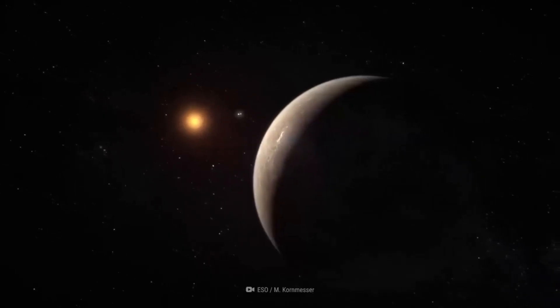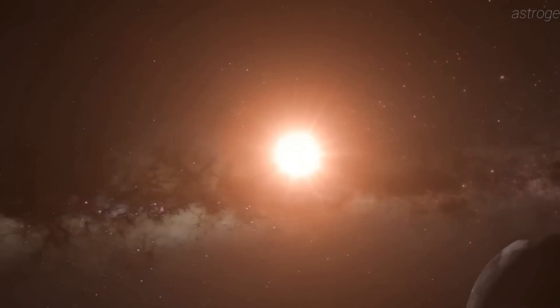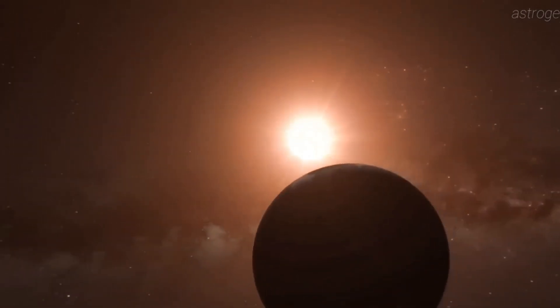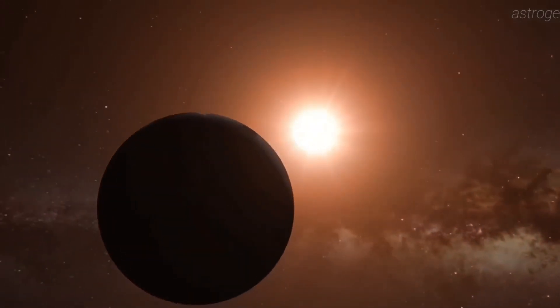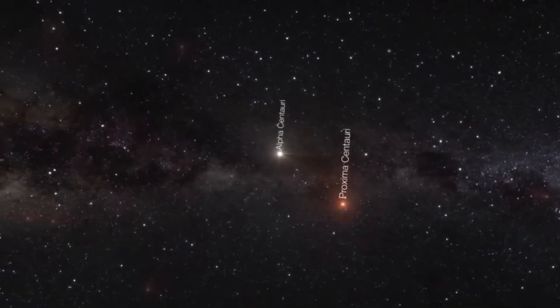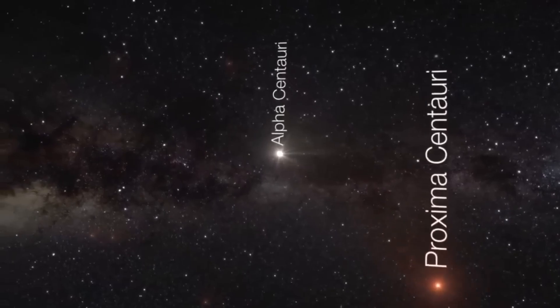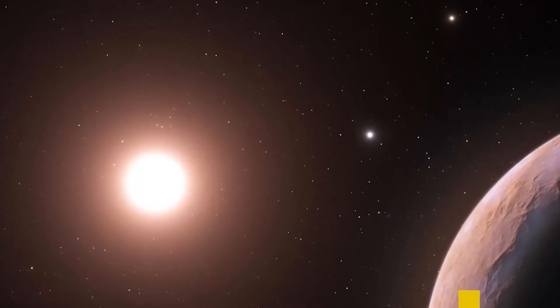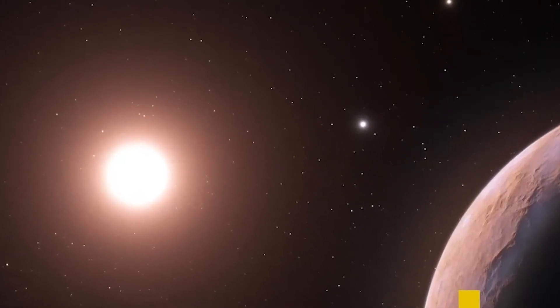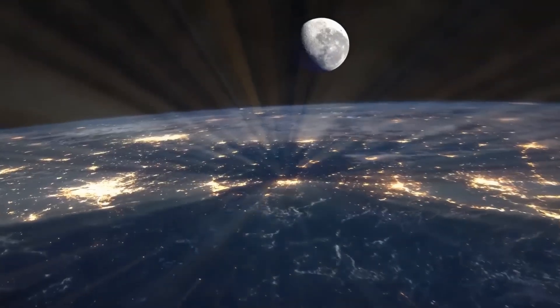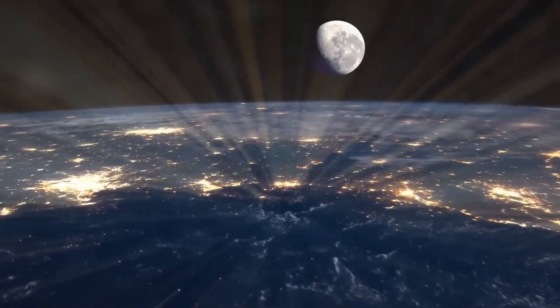Proxima Centauri b, also referred to as Proxima b, is an exoplanet orbiting in the habitable zone of the red dwarf star Proxima Centauri. Proxima Centauri is the closest star to the Sun and part of a complex triple star system called Alpha Centauri.